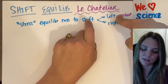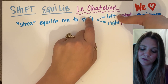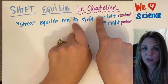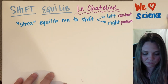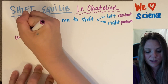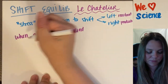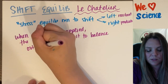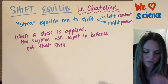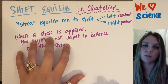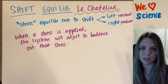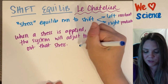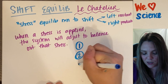We have this lovely French dude — Le Chatelier. He came up with a principle about equilibrium. Basically, if I have a stress that I apply, my equilibrium is going to shift and adjust to balance out whatever stress I just applied on it. And there are basically three stressors that I can put on a reaction.